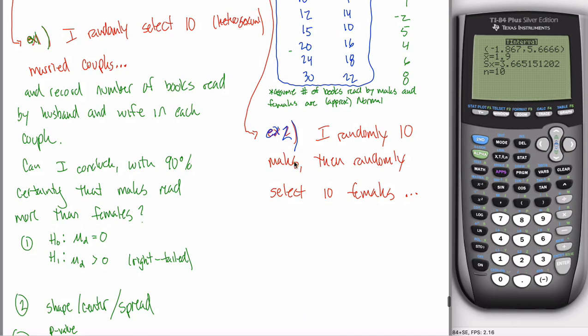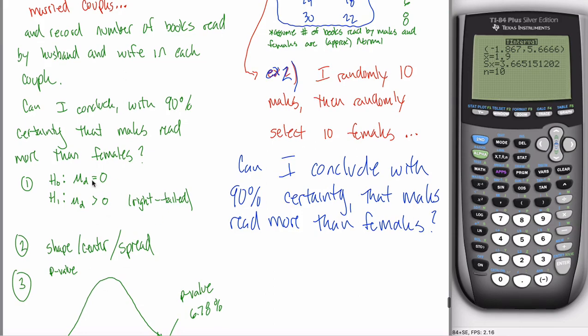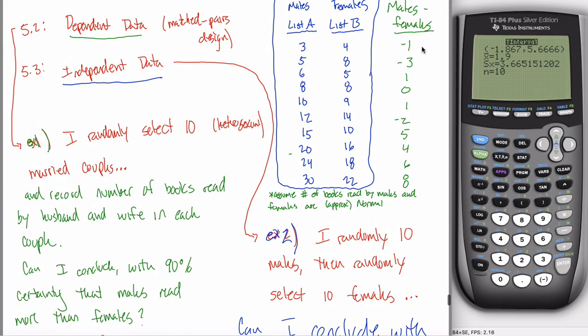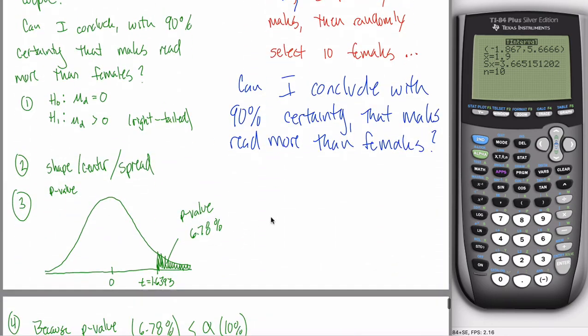Alright. So without further ado, I randomly select 10 males, then randomly select 10 females, record how many books that they read in a month or a year, I guess this would be, whatever. That data is shown above. Pretend that's what this says. And then maybe I asked the exact same question as I asked here. Can I conclude with 90% certainty that males read more than females?